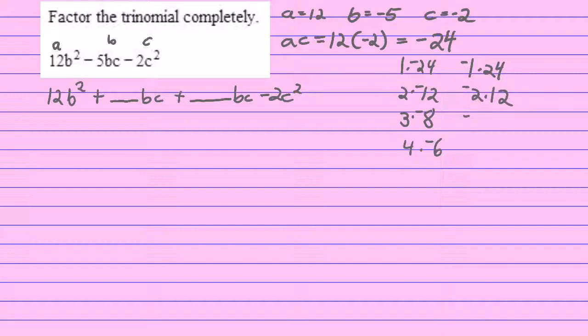Now also negative 1 times positive 24, negative 2 times positive 12, negative 3 times positive 8, and negative 4 times 6. Now what I need to do is I need to find which one of these pairs of numbers adds up to the b number, negative 5, and that would be 3 and negative 8, because 3 plus negative 8 equals negative 5.